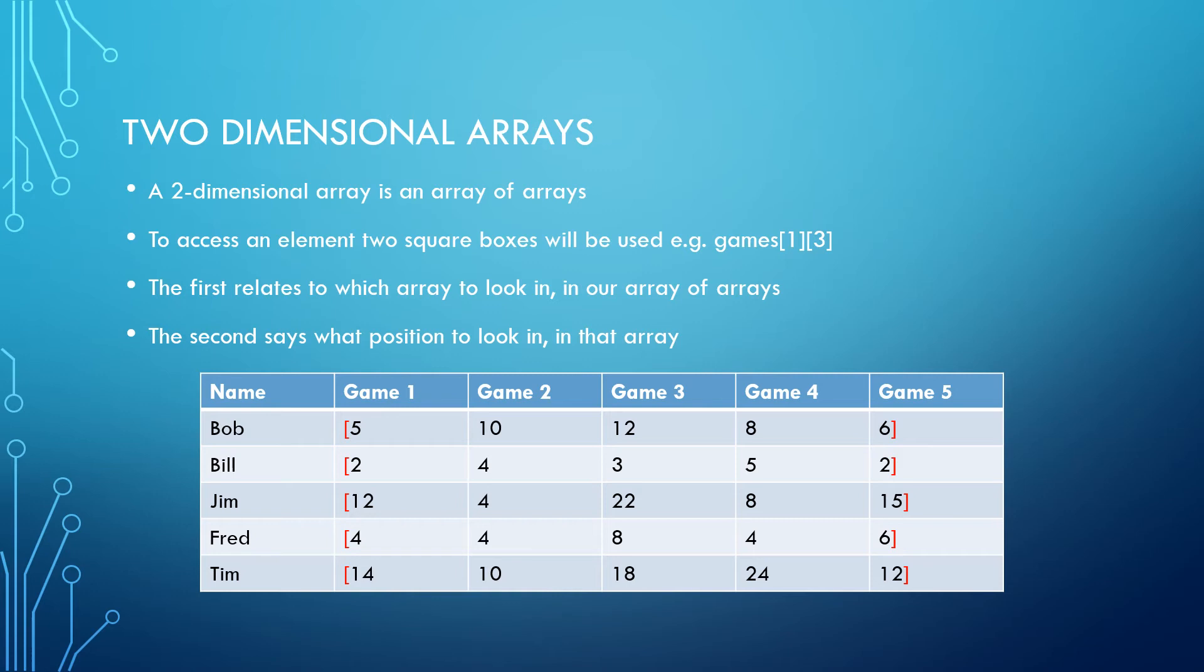The second box here refers to which game within that array are we looking at. If we look at the example here, games one three, this refers to array one, which is Bill's array, and position three, which remembering indexing starts at zero means it will be the fourth value, will be five. We can use the same referencing method to assign new values to items in a two-dimensional array.